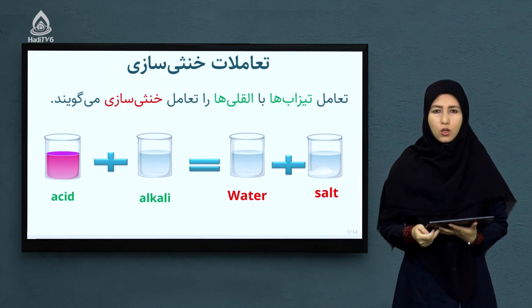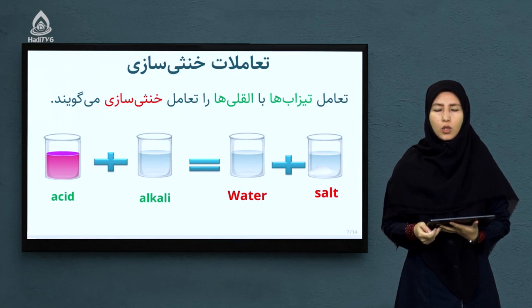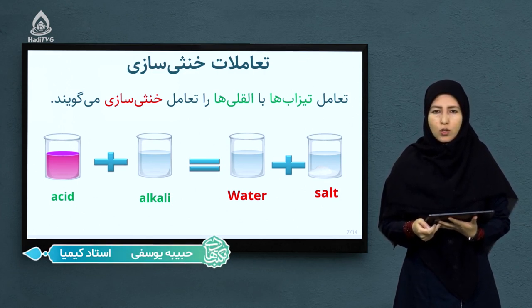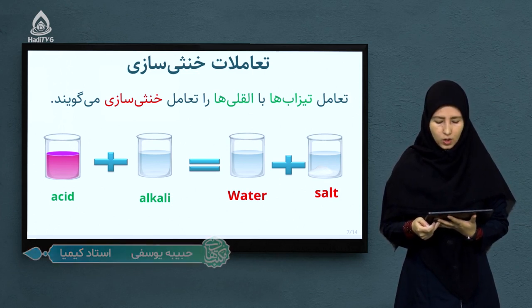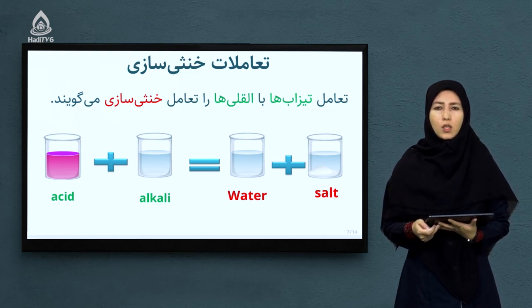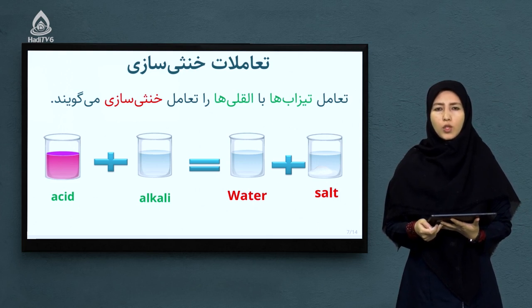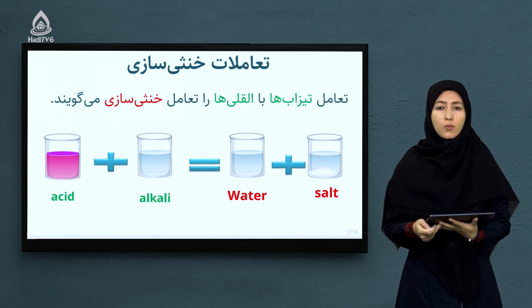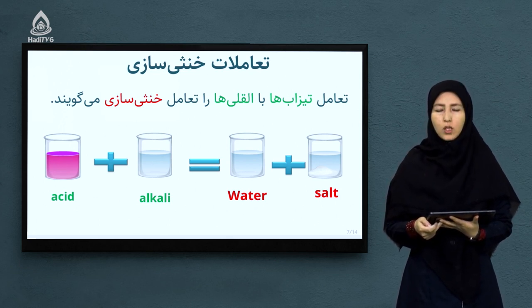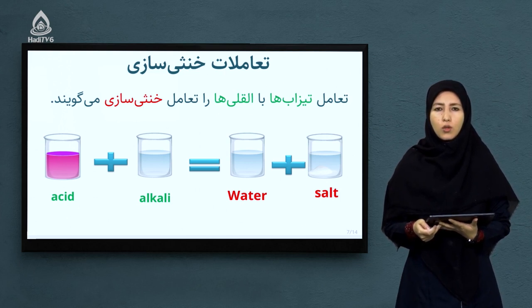تعاملات خنثی سازی چیست؟ تعاملات خنثی سازی در لابراتوارها و معادلات کیمیایی بسیار پرکاربرد و مهم است. در تعامل خنثی سازی اگر یک تیزاب با یک القلی وارد تعامل شود به این قسم تعاملات، تعاملات خنثی سازی گفته می شود. به این خاطر که تیزاب و القلی با هم که وارد تعامل می شوند نمک ها را تولید می کنند که نمک ها به طور طبیعی حالت خنثی دارند.